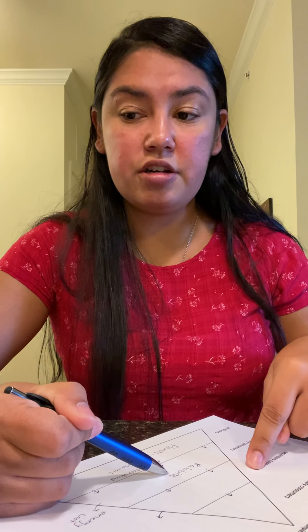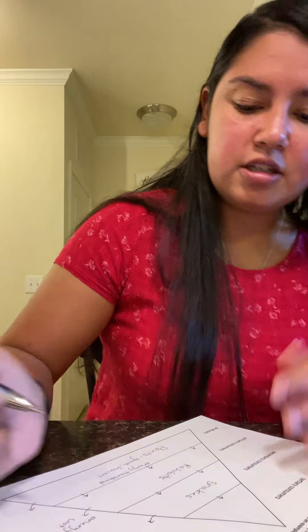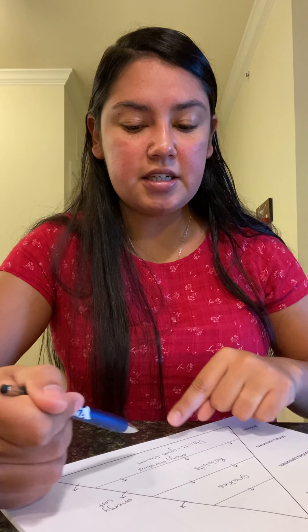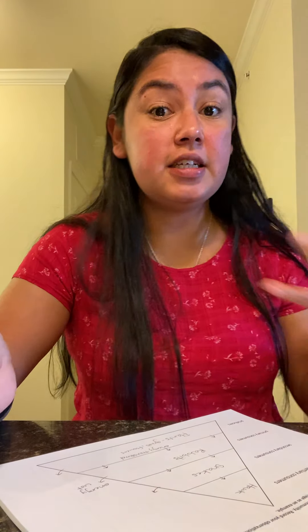Once the rabbits eat the grass, the secondary consumers are going to be an animal that feeds off of rabbits — let's say snakes. Snakes feed off the rabbits. The plants transfer energy to the rabbits; the rabbits eat the grass and have their own energy, which they transfer to the snakes. Now, what is an animal that eats snakes? I'm going to go ahead and put hawk. They're in the sky, they see the snake, and they get their energy from the snake.